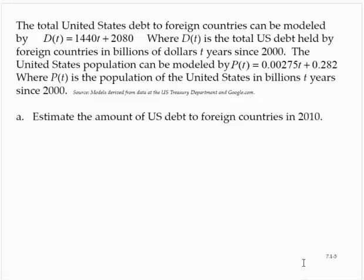The total United States debt to foreign countries can be modeled by D of T, where D of T is the total US debt held by foreign countries in billions of dollars, T years since 2000. The United States population can be modeled by P of T, where P of T is the population of the United States in billions, T years since 2000.